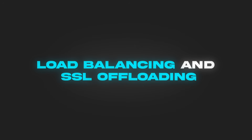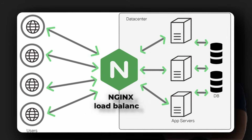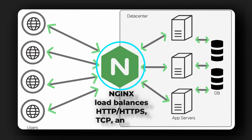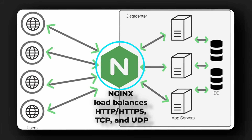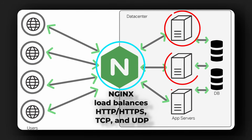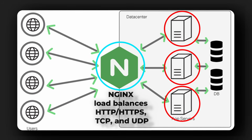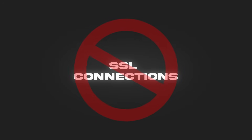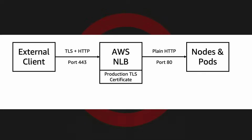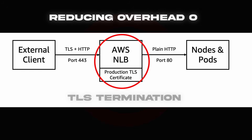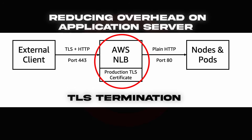Another use case is load balancing and SSL offloading. In server-side use, proxies can distribute incoming traffic across a fleet of back-end servers to improve scalability and reliability. They can also terminate SSL connections — which I'll explain later — reducing overhead on application servers.